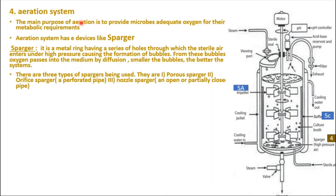The aeration system's main purpose is to provide oxygen necessary for the microorganism's metabolic requirements. Aeration uses two types of devices: the sparger and the impeller. The impeller handles both oxygen supply and mixing. The sparger is a metallic ring with a series of holes through which sterile air enters at high pressure, causing the formation of bubbles. These bubbles supply oxygen into the medium by diffusion. Smaller bubbles mean better diffusion and a better system.